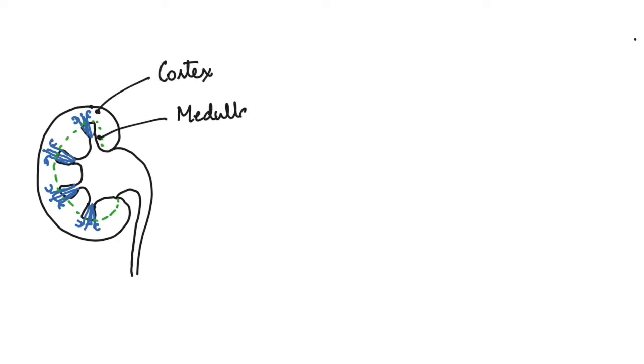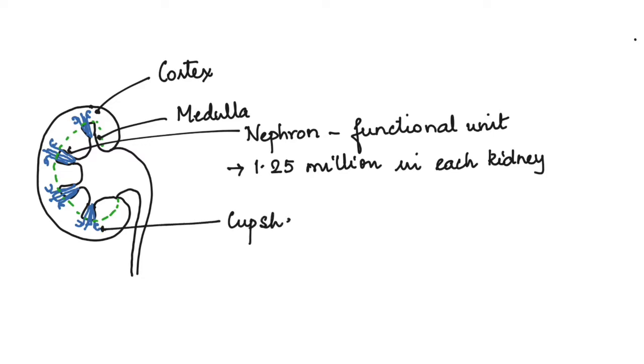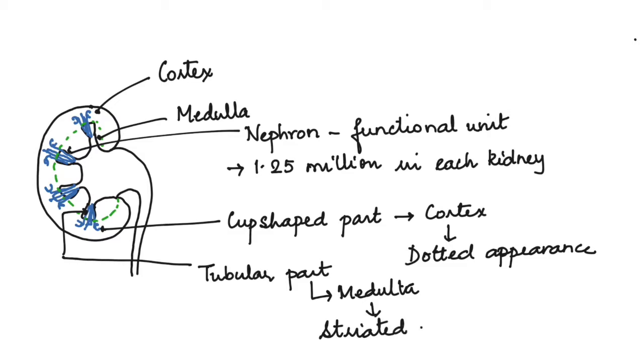First, let us see the location of the nephron. Here I am drawing the section of the kidney. We have already seen in the previous video the longitudinal section of the kidney. The blue structures I have drawn represent the nephron. The kidney has two regions: the outer cortex and the inner medulla. The nephrons are placed in such a way that they are present in both the cortex and the medulla. These functional units number about 1 to 1.25 million in each kidney. The nephron has a cup-shaped part located in the cortex that gives the cortex a dotted appearance, and a tubular part located in the medulla that gives the medulla a striated appearance.